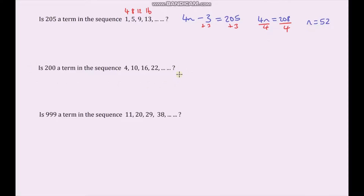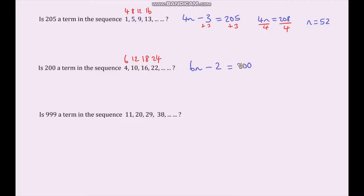Now looking at the second question: is 200 a term in this sequence? The first thing is to work out the nth term. The difference between terms is 6, so it starts with 6n. Doing my 6 times table, the adjustment is subtract 2, giving 6n minus 2. I'll set that equal to 200 and solve. Adding 2 to both sides gives 6n equals 202.